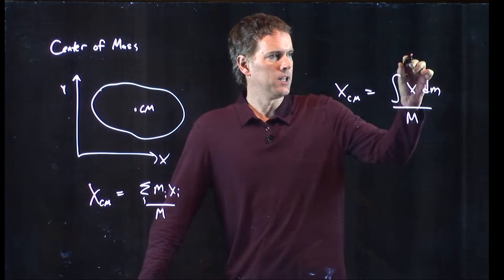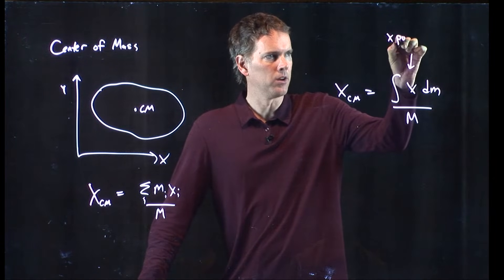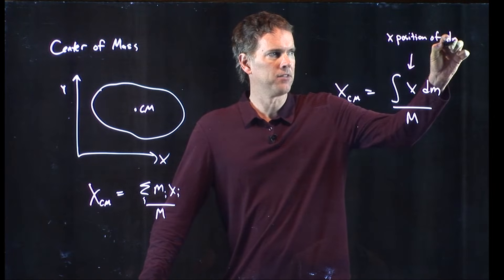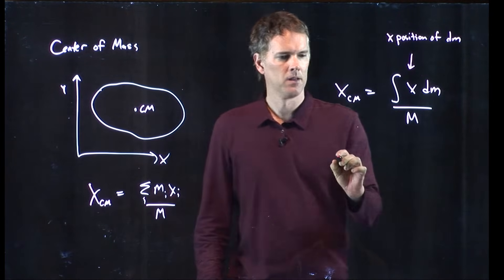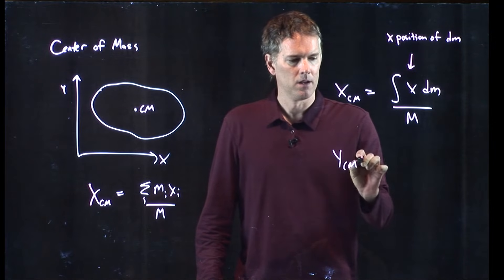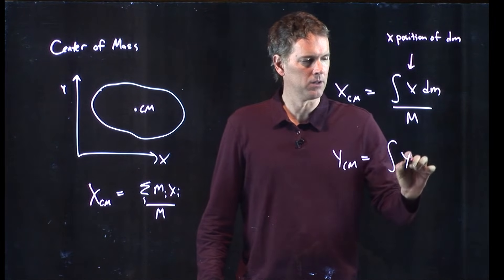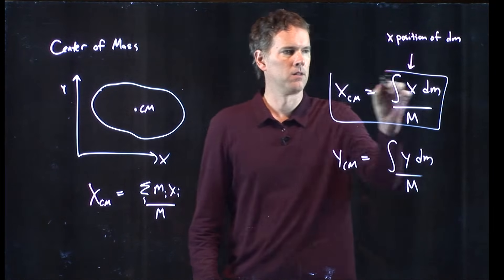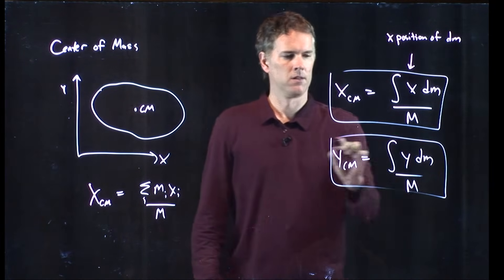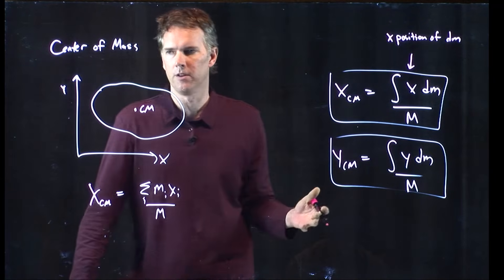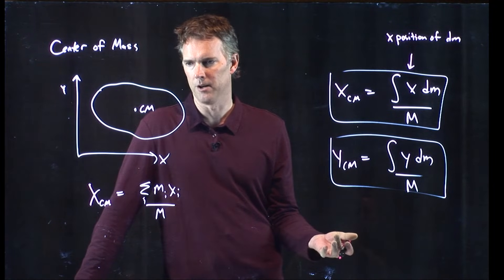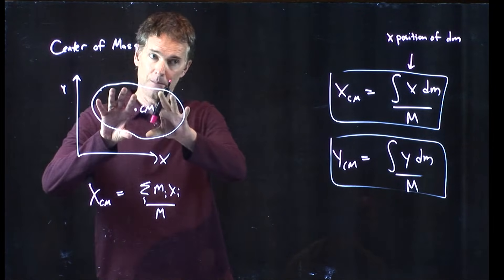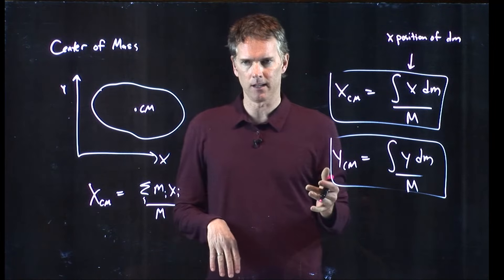x is the x position of that little mass element dm. y is going to look like this. And if you have three dimensions, you can write z center of mass as well. So, if you know what the functional form is of your blob, then you can plug it into the integral and you can calculate it. But let's say you don't know what it is.